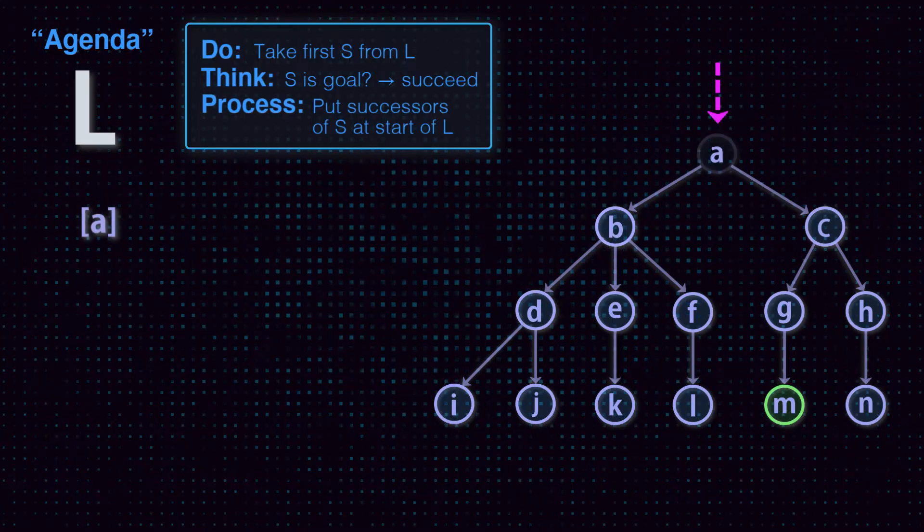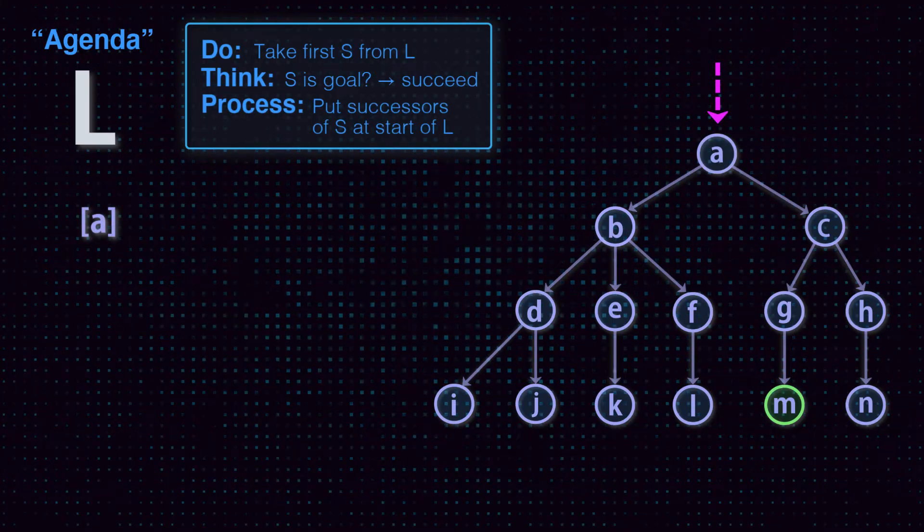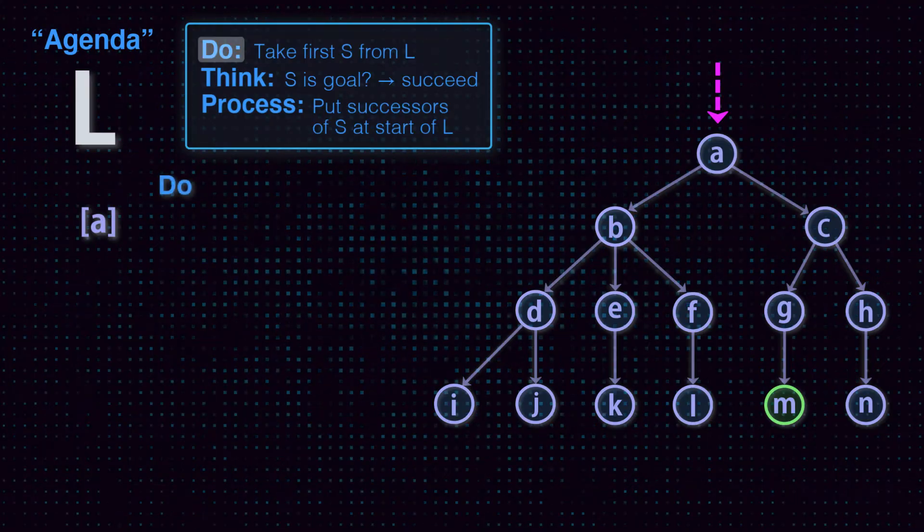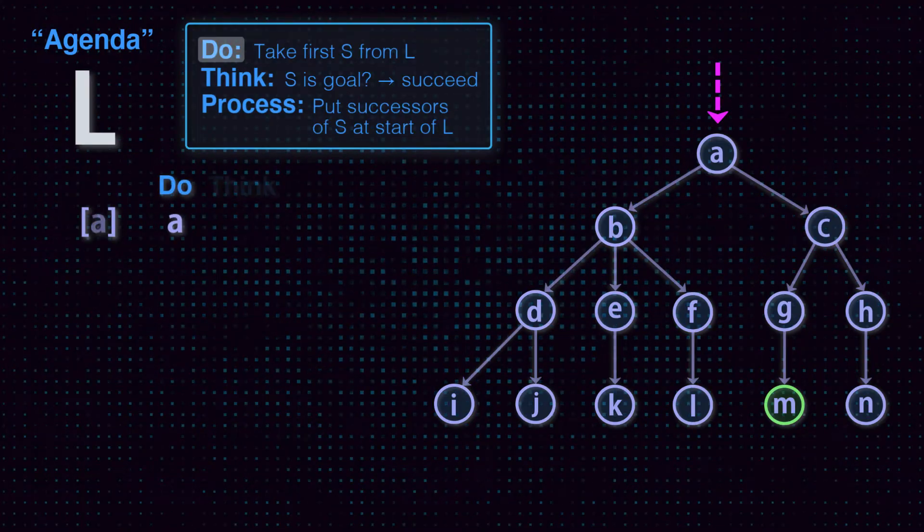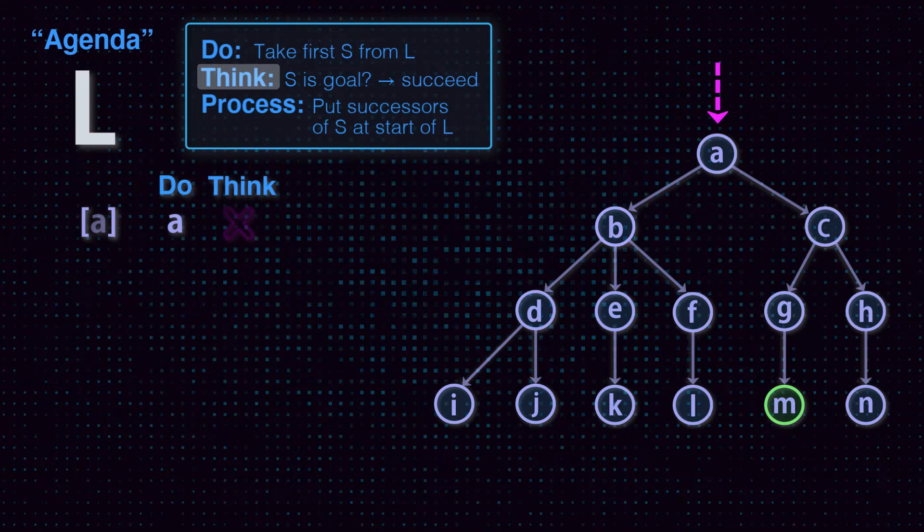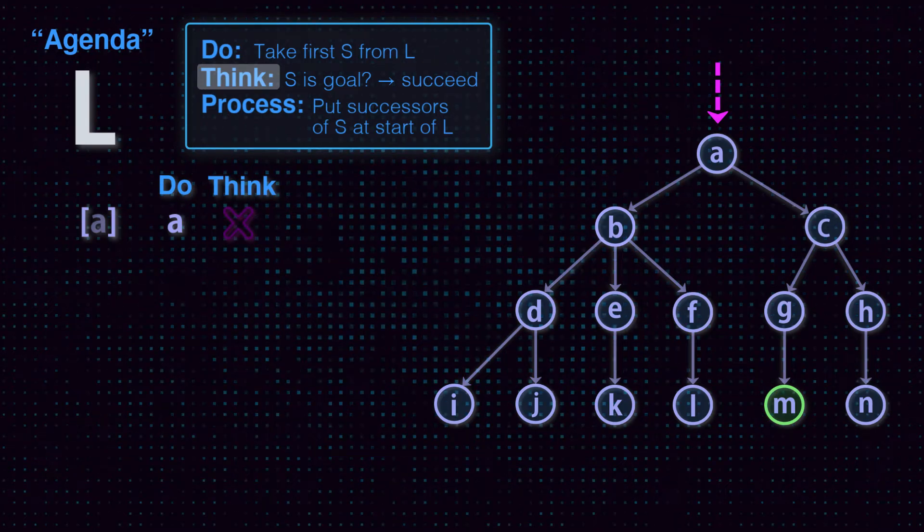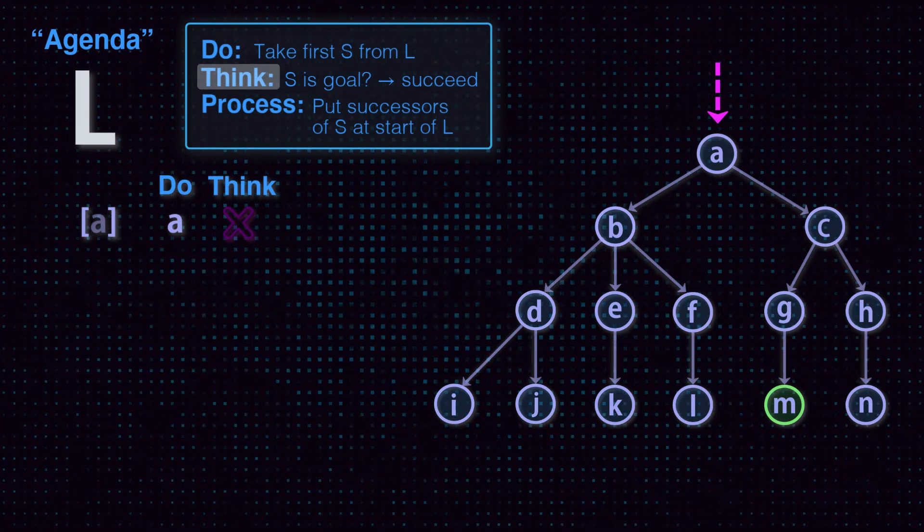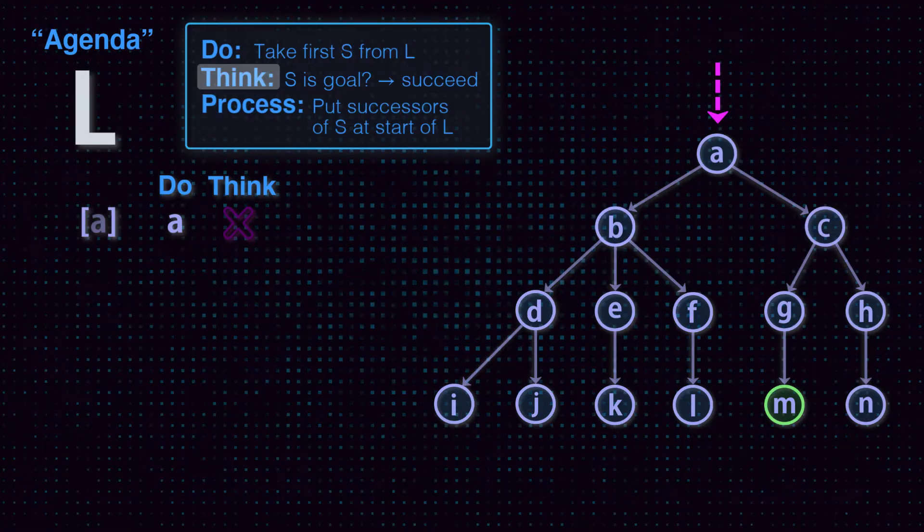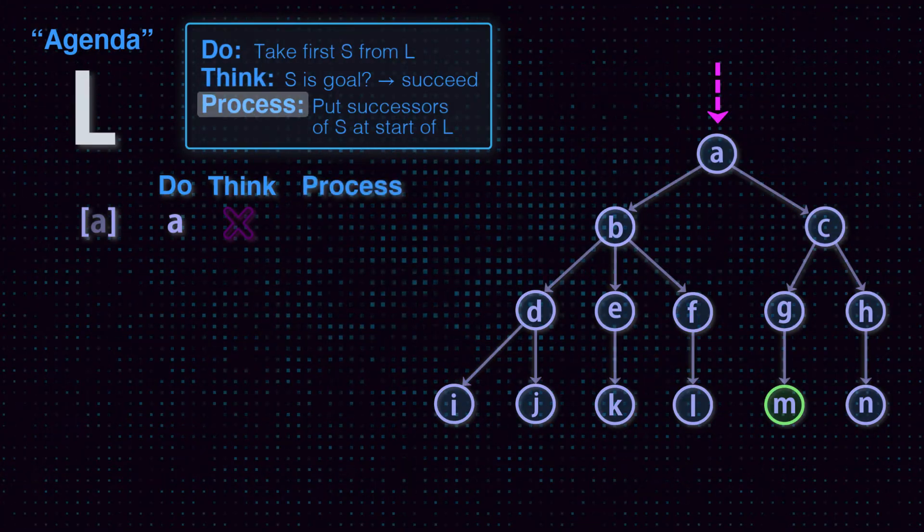At the start, we put the first state in L. The do step takes it out. It's not the goal, so the second step fails. B and C are the successors of A, so the process step adds them to L.